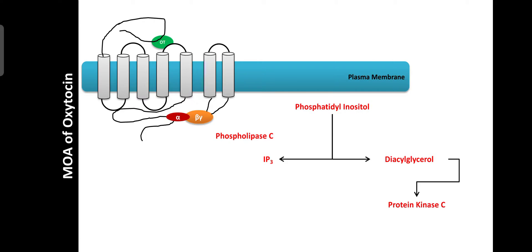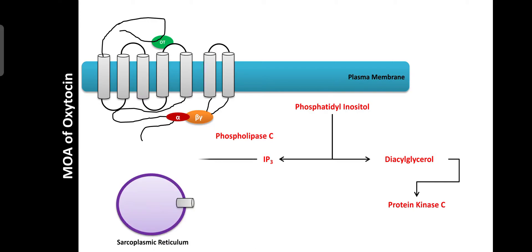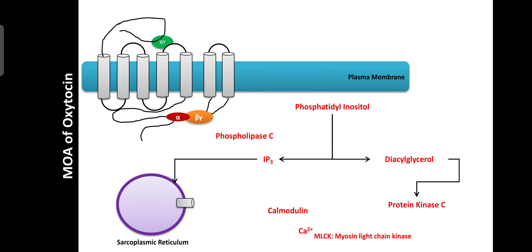Regarding inositol triphosphate, it is responsible for the release of calcium from the sarcoplasmic reticulum, which is the store for calcium in the cell. This released calcium reacts with calmodulin and activates myosin light chain kinase. Due to activation of myosin light chain kinase, the myosin filament falls on the actin filament and the size of the muscle decreases — this is known as contraction. Thus, contractions of uterine smooth muscle by oxytocin acting on oxytocin receptors is helpful for induction of labor or to cause abortions.